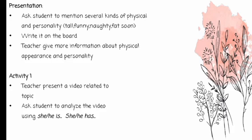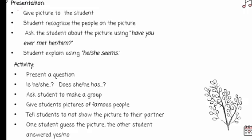After watching the whole video, students have to analyze the appearance and personality of each character using sentence forms: 'She/he has...' and 'She/he is...' — for example, 'She has curly hair' or 'She is a young woman.' The second presentation involves the teacher giving pictures to students and asking if they recognize the people in the pictures. The pictures could be of celebrities or famous people.